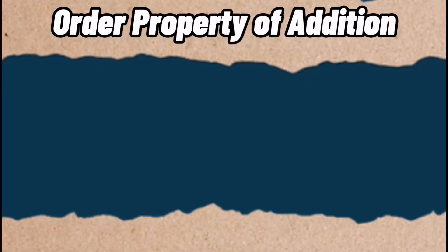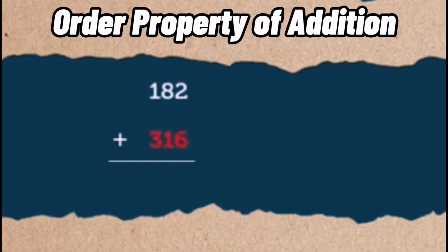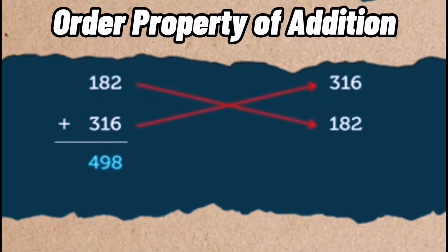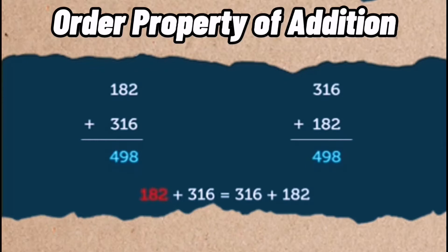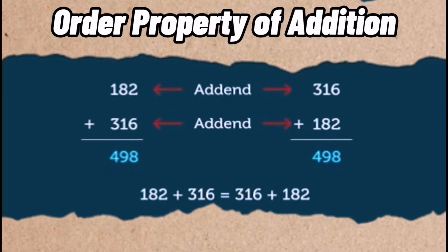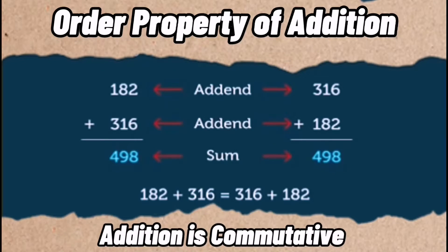Order property of addition. Let us take the numbers 182 and 316. When we add 182 and 316, we get the sum 498. Now let us change the order of addends. Let us add 316 and 182 — again we get the sum 498. Hence, 182 plus 316 is equal to 316 plus 182. Thus, we know that changing the order of the addends does not change the sum. We can say addition is commutative.